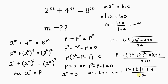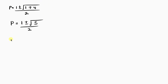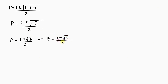Continuing: 1 plus 4 equals 5, so p equals 1 plus or minus the square root of 5, divided by 2. Separating: p equals 1 plus the square root of 5 over 2, or p equals 1 minus the square root of 5 over 2.